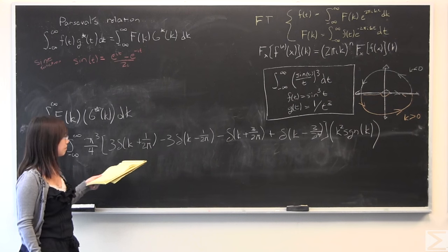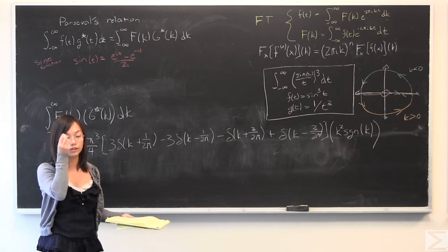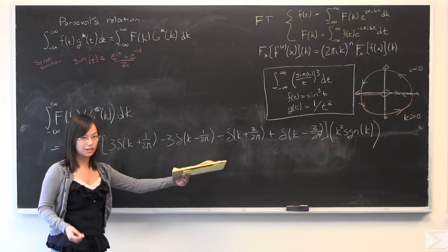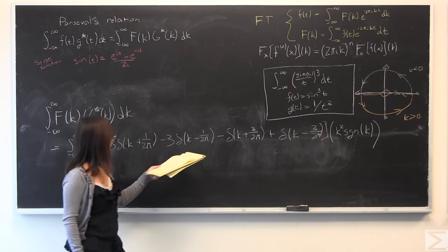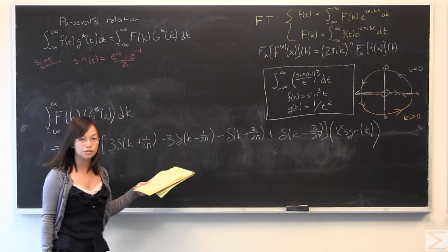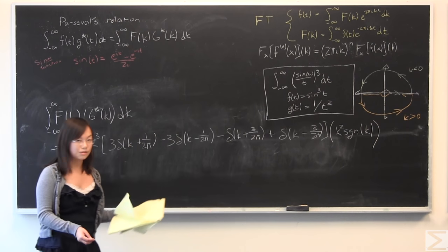It's very simple. You have a bunch of Dirac delta functions. You take the integral of the Dirac delta function, multiply it by a function at a certain point. You get the value of the function at a certain point. We have narrowed it down to a few points, plus or minus 1 over 2π, plus or minus 3 over 2π.